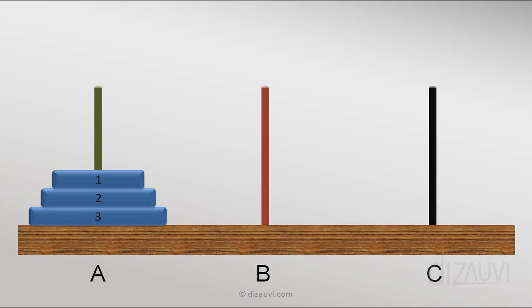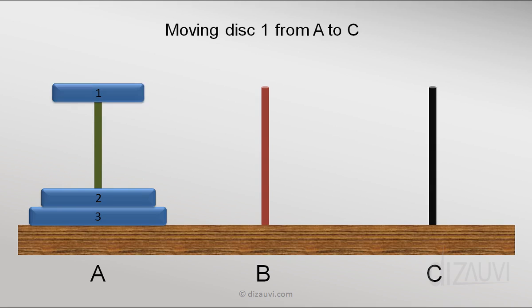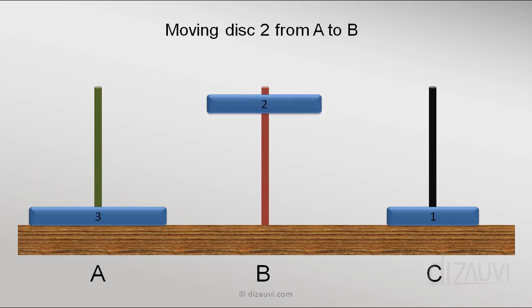So here what we are saying is that we want to move three disks from tower A to C using tower B. Which means that we can move two disks from tower A to B using C. And what we did earlier was that we first moved disk 1 from A to C. Then we moved disk 2 from A to B. And then moved disk 1 from C to B.